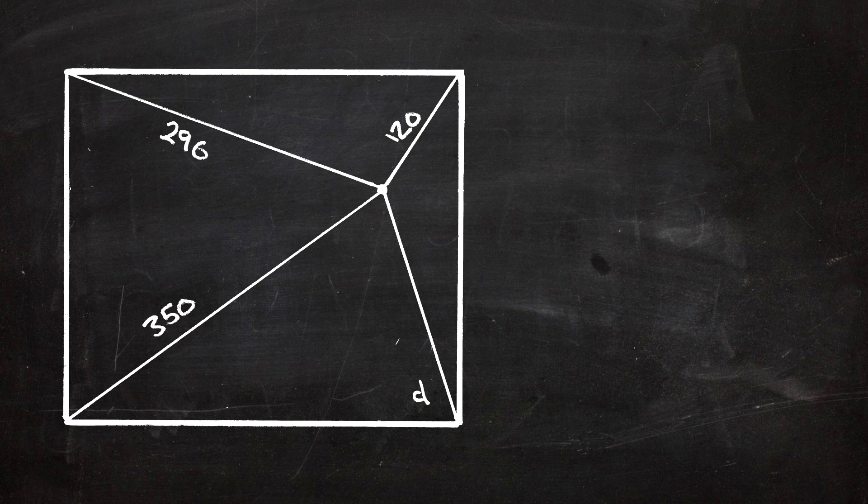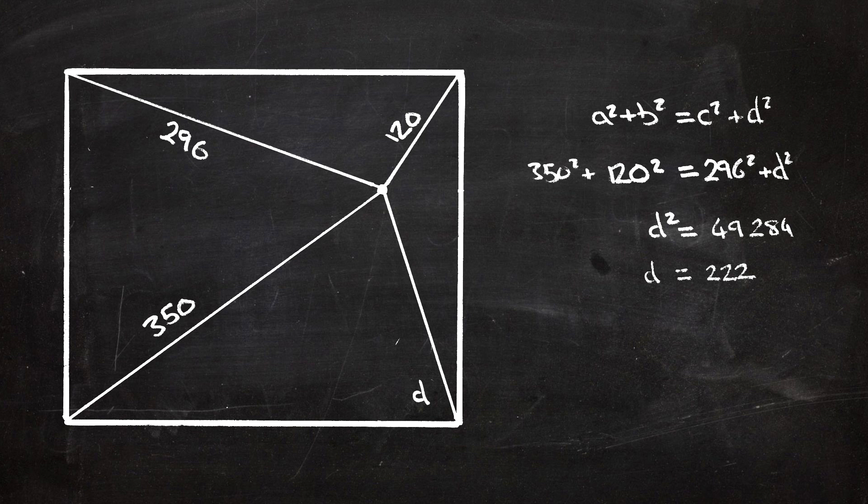So if we're using the British flag theorem, A squared plus B squared equals C squared plus D squared, then we can work out that D squared is equal to 49,284. Or in other words, D is equal to 222 metres.